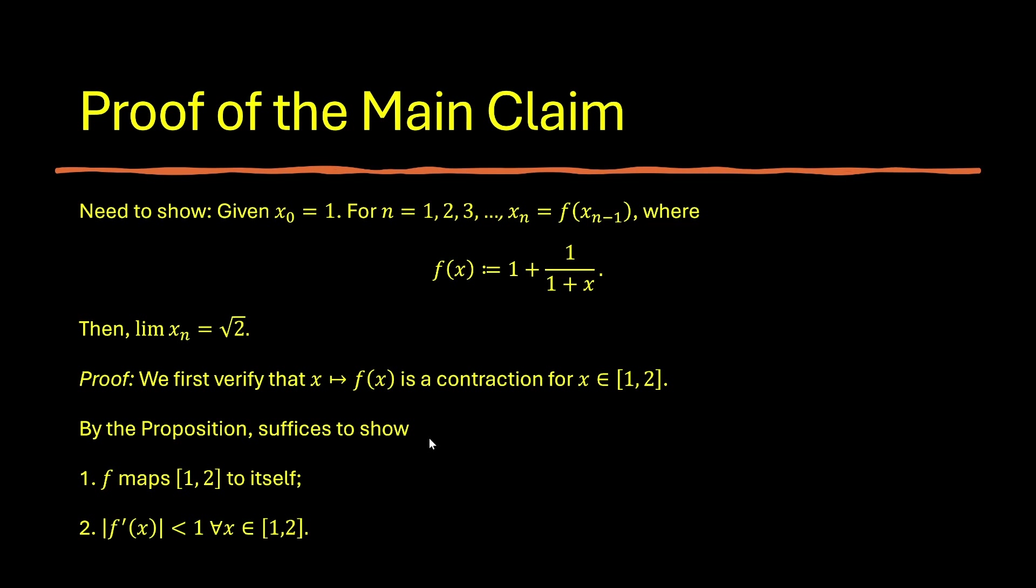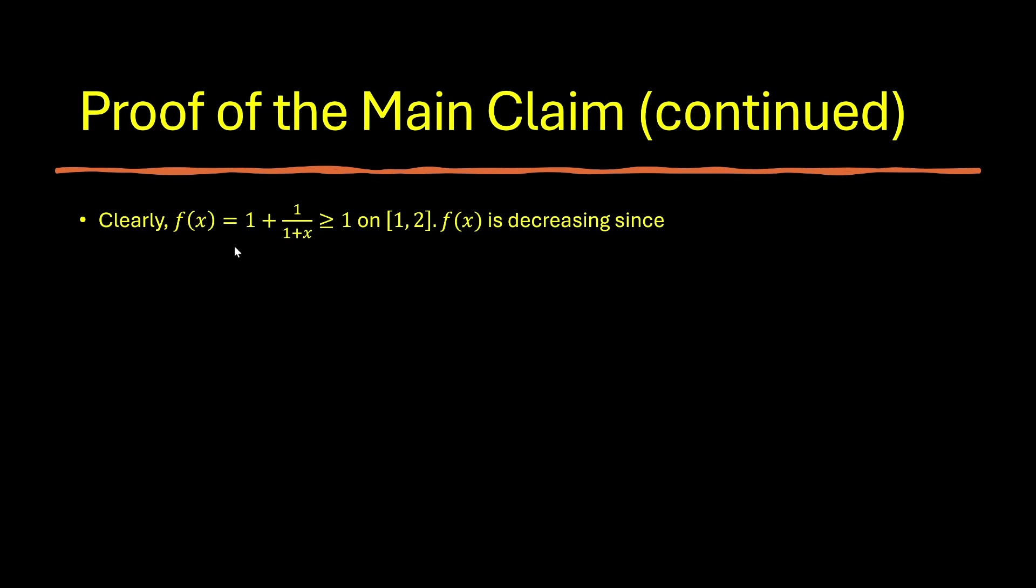It does not have to be the entirety of 1 to 2. It just needs to be a subset of it. So therefore, by the proposition, it suffices to show that f maps 1, 2 to itself. f prime of x absolute value is less than 1 for every x in 1, 2. We already seen the visual evidence that f maps from 1, 2 to itself. However, we do need to actually formally prove it. Clearly, f of x is 1 plus 1 over 1 plus x. And x is in 1 to 2, so therefore it's positive. f of x must be greater or equal to 1.